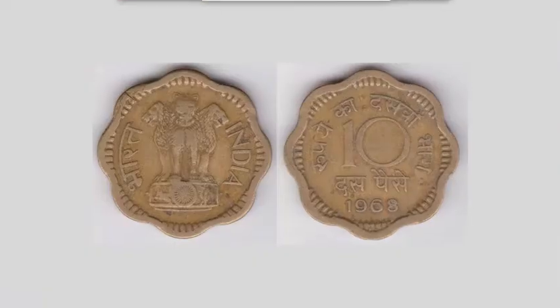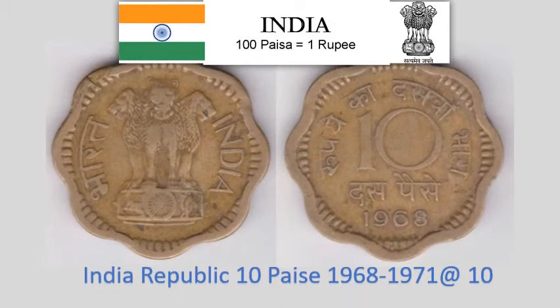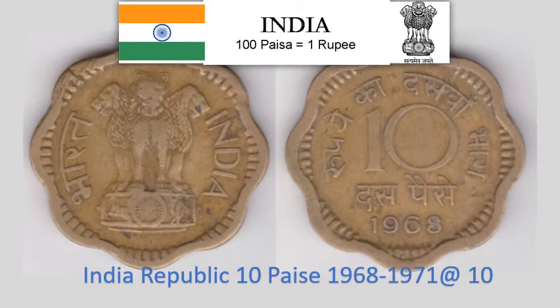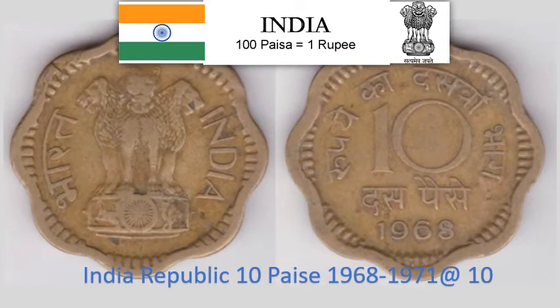India Republic 10 Paise 1968–1971. 4.3 gram Nickel Brass scalloped coin with 8 notches, 23 mm diameter. Krause Reference No. 26. Approximate market value Rs. 10.